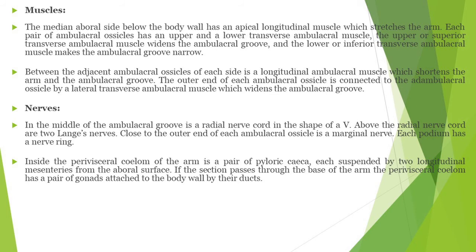In the middle of the ambulacral groove is a radial nerve cord in the shape of a V. Above the radial nerve cord, two lunge nerves are present. You should specifically know that the lunge nerves are related to echinodermates and are related to the paravisceral coelome of the arm.